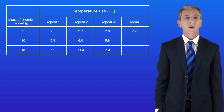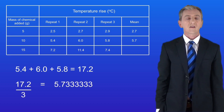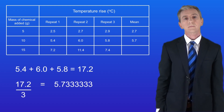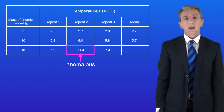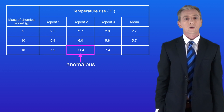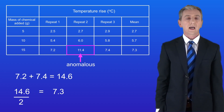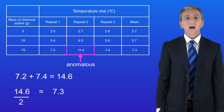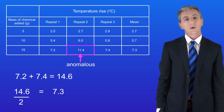For the third row, there is an anomalous result — repeat 2 is clearly much bigger than the other two repeats. We must not include this anomalous result in the mean. To calculate the mean, we add together 7.2 and 7.4, giving 14.6 — remember to press equals. We then divide by 2, because we're now using 2 numbers, not 3. This gives a final mean value of 7.3.